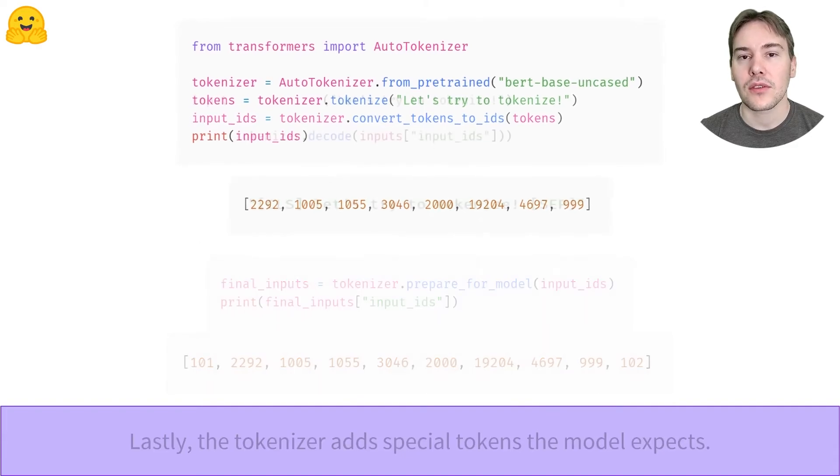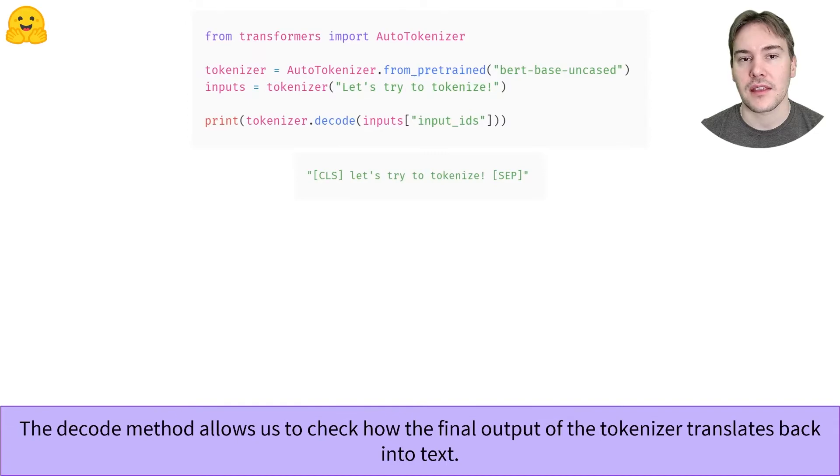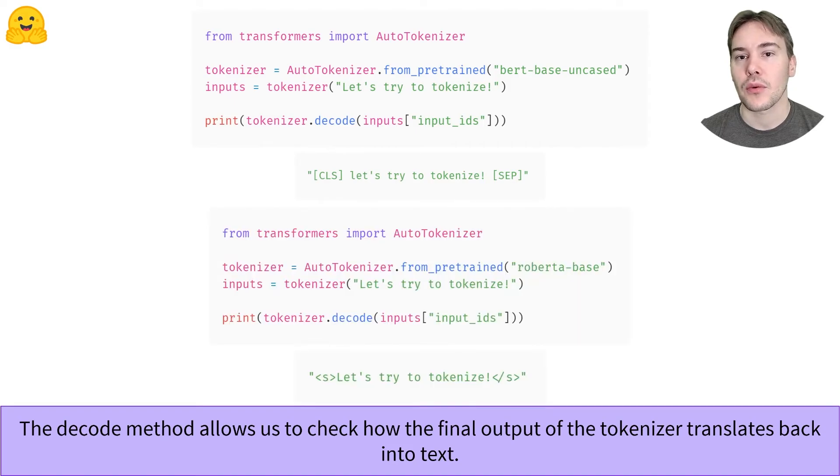You can look at the special tokens and more generally at how the tokenizer has changed your text by using the decode method and the outputs of the tokenizer object. As for the prefix for beginning of words part of words, both special tokens vary depending on which tokenizer you're using. The BERT tokenizer uses CLS and SEP, but the Roberta tokenizer uses HTML-like tags S and slash S.